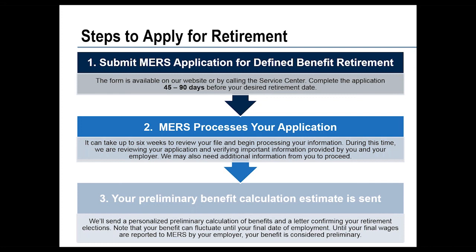The preliminary estimate is the minimum because you'll still have a few weeks of work left, so we won't have your very final wage information. Your first pension payment is based on that preliminary estimate. If there's any additional benefit due — if your last wage reporting bumps up your final average compensation — we'll recalculate. By your second or third pension payment, you'll receive the increased payment plus a separate payment for the difference, and from that point you'll know exactly how much your pension payment will be for the rest of your life.